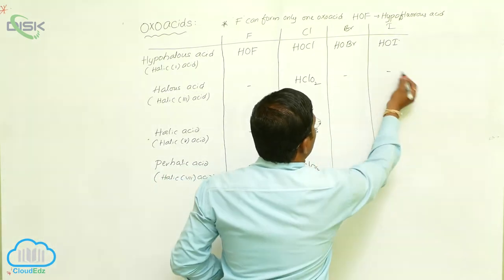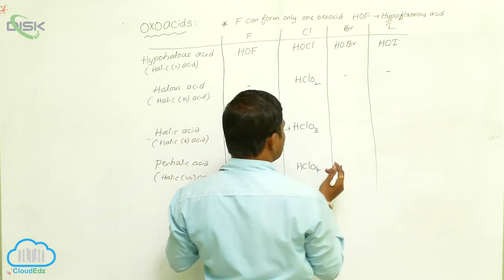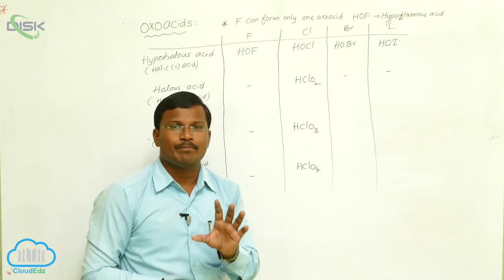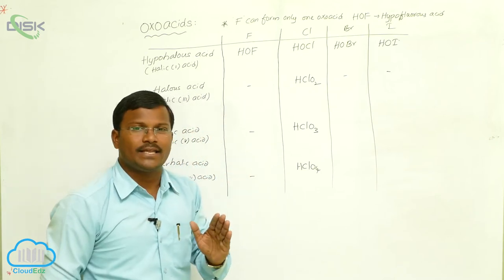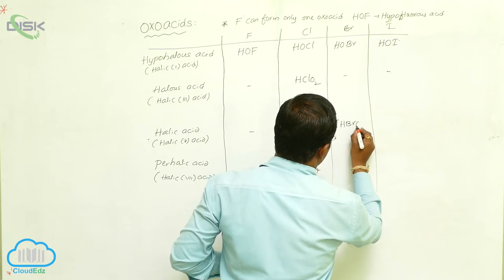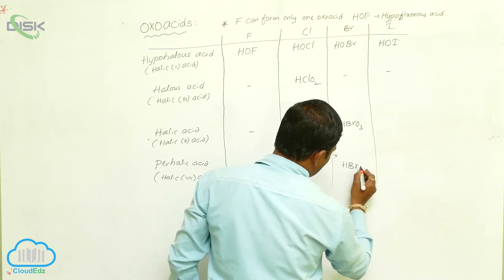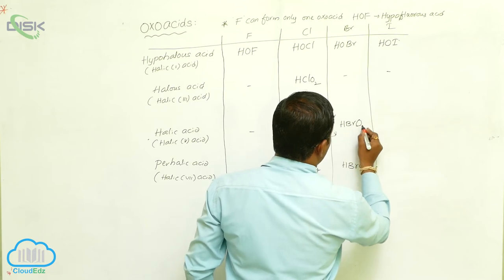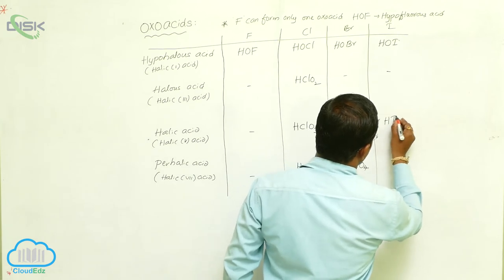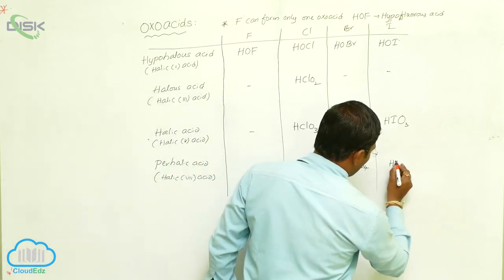Bromine and iodine do not form stable halic-3 acids; the oxoacids they form may exist only in aqueous or salt form. Bromine can form HBrO3 (bromic acid) and HBrO4 (perbromic acid). Iodine can produce HIO3 (iodic acid) and HIO4 (periodic acid).